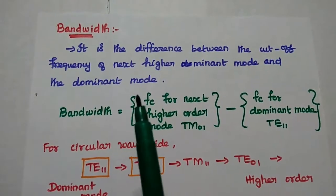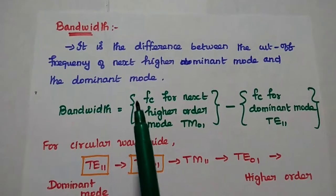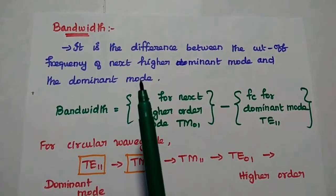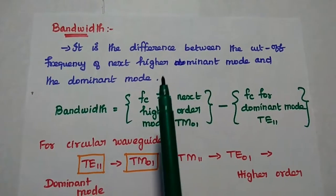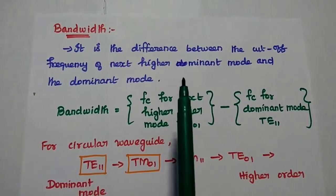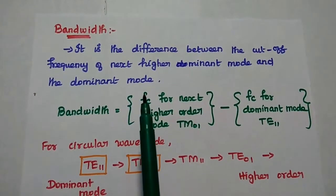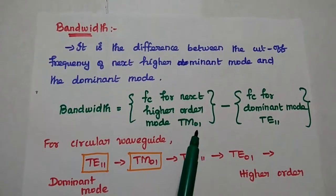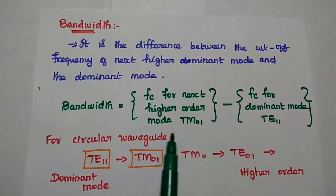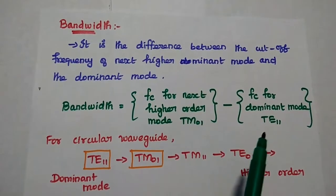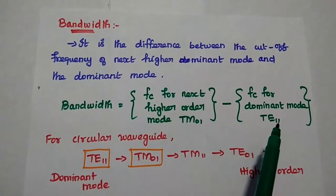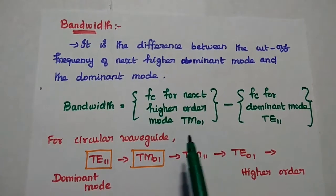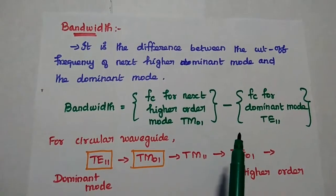Dear students, now we are going to solve an important problem in bandwidth for circular waveguide. Bandwidth is the difference between the cutoff frequency of the next higher order mode and the dominant mode. For this circular waveguide, the first dominant mode is TE11, and the next higher order mode is TM01. So here we are going to take the difference between these two cutoff frequencies.